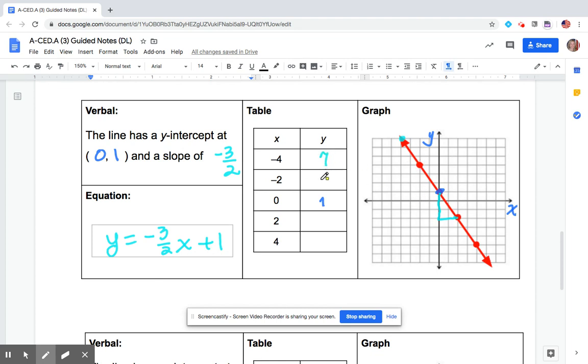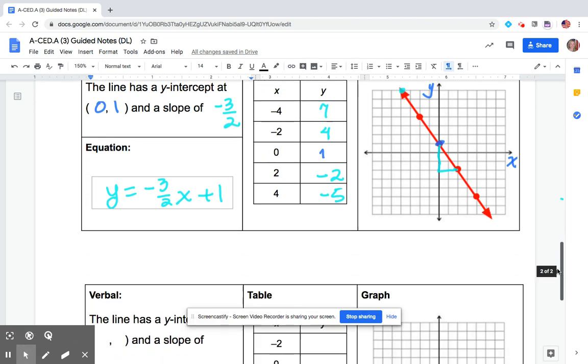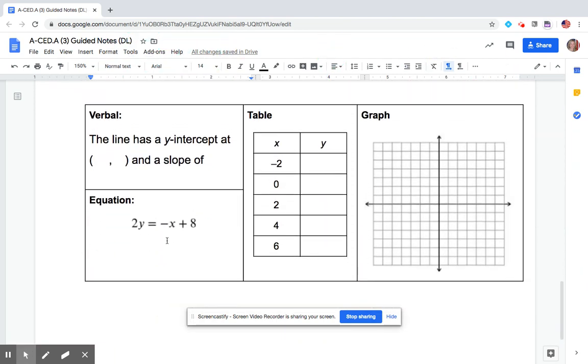-2 comma 4. Do you see the pattern? As x increases by 2, y decreases by 3. So this has to be -2, right? And it is. This has to be -5.